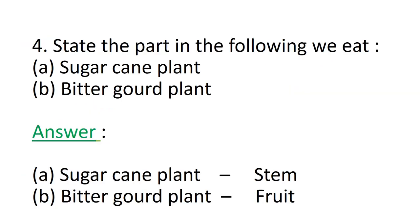Question number 4: State the part in the following plants that we eat. A: Sugarcane plant, and B: Bittergourd plant. In the sugarcane plant, we eat or consume the stem. However, in bittergourd, commonly known as Karela, we eat the fruit of the plant.